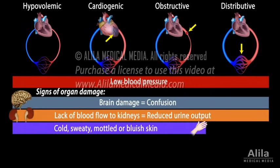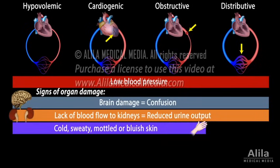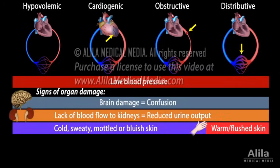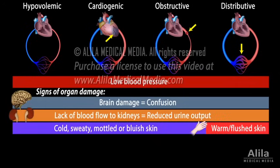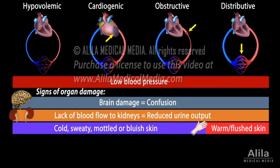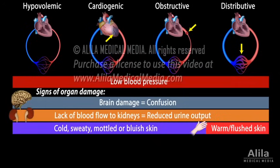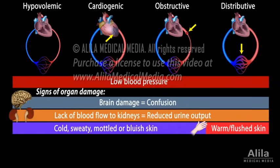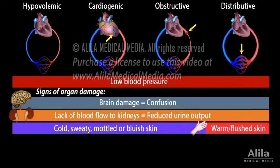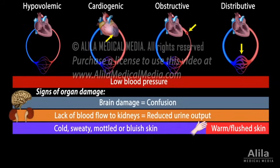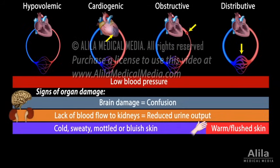although distributive shocks due to sepsis or anaphylaxis may initially produce warm or flushed skin. This is because the infection in sepsis usually comes with fever, and the allergic reaction in anaphylaxis is accompanied by hives.